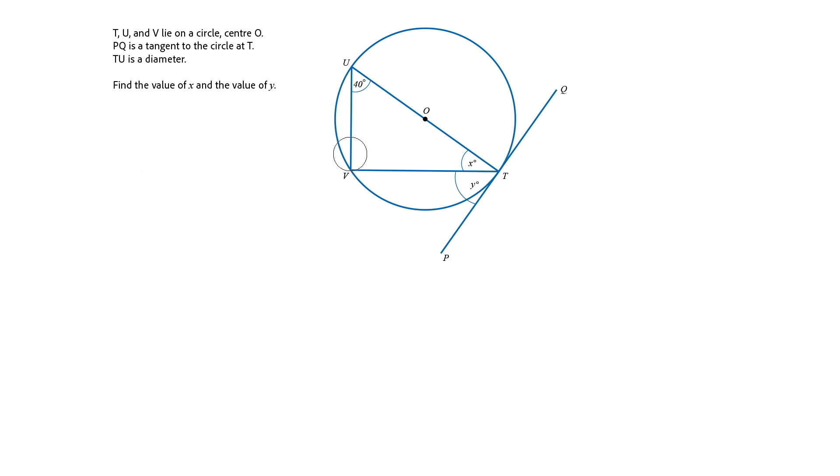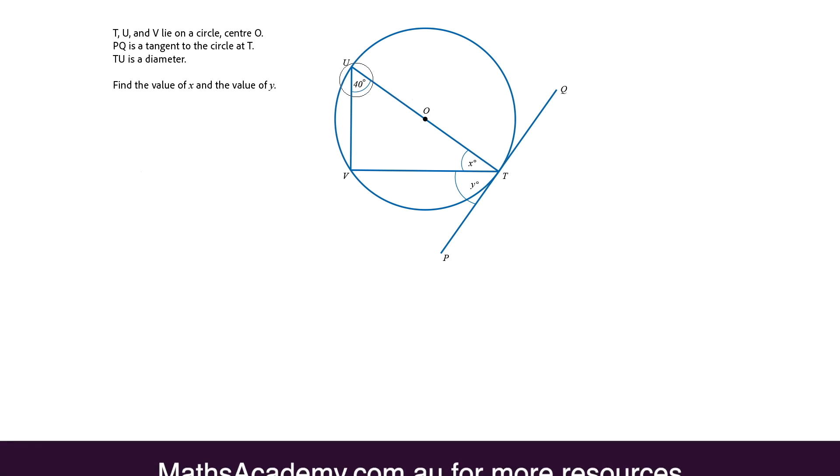T, U, and V lie on a circle center O. PQ, this line here, is tangent to the circle at T. And T, U is a diameter.